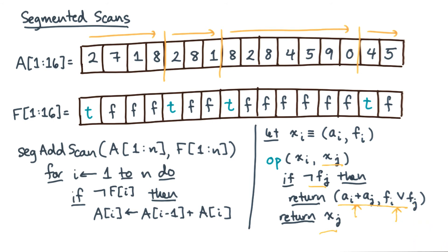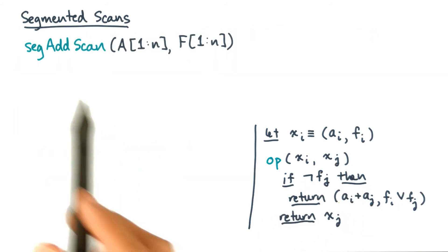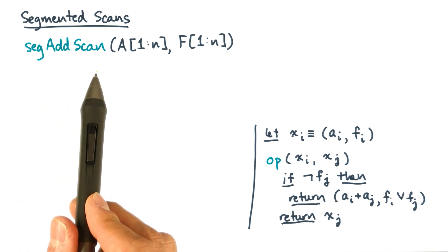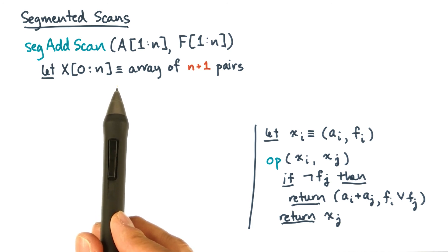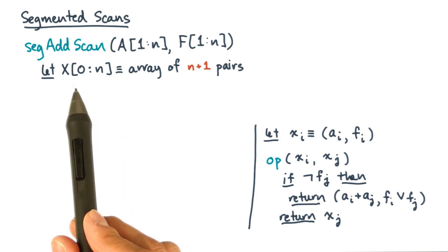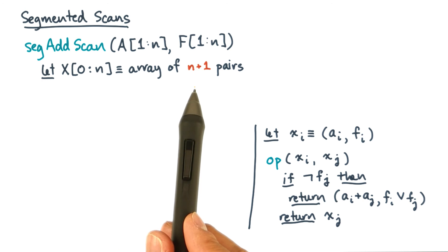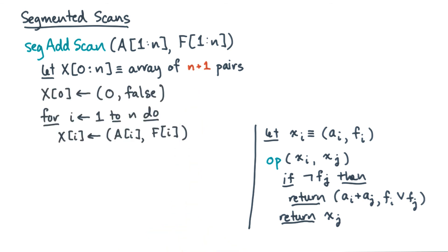Now I claim if you have this operator, you can rewrite the segmented add scan from before in a different way. Let's see how. Here's our operator from before, and here's the new implementation of segmented add scan. First, we'll declare a new array to hold these pairs. And notice it starts at 0 instead of 1, so there are actually n plus 1 such pairs.